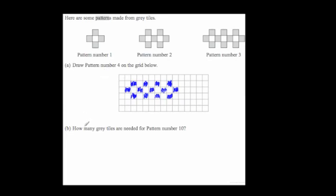The question says how many grey tiles are needed in pattern number 10. In pattern 1 we've got 4 grey tiles, in pattern 2 we've got 7, in pattern 3 we've got 10. And as you can see each time we're adding on 3, so that would be 13 and so on.